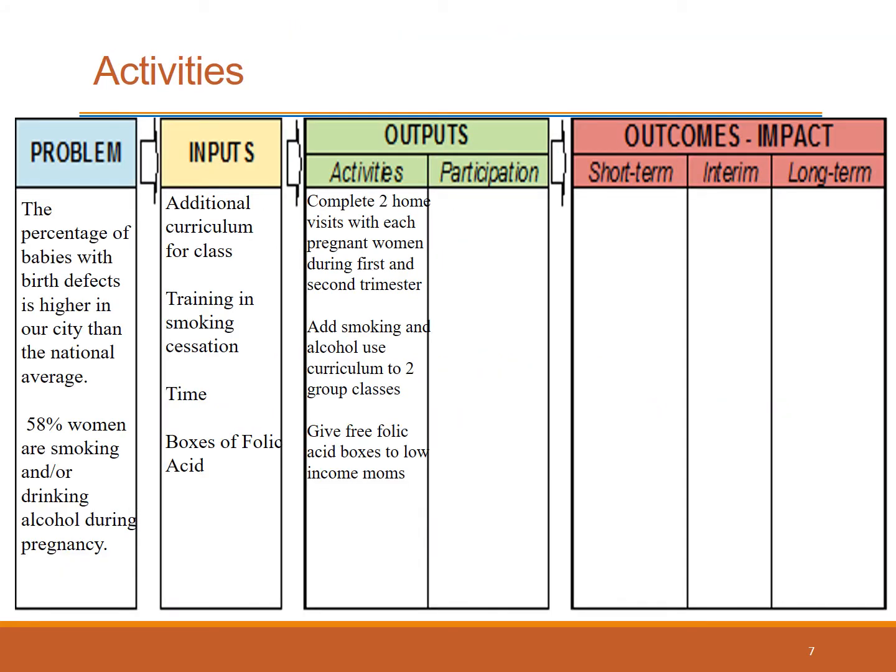Thinking about the different levels of the ecological model, let's add activities. At the individual level, we provide education on smoking cessation and alcohol use in home visits and group classes. At the interpersonal level, we might involve the mother's partner in the home visit or class to increase social support for cessation. At the community level, we might make folic acid more available to low-income moms by offering it for free at the clinic.